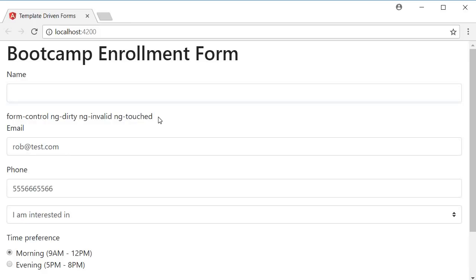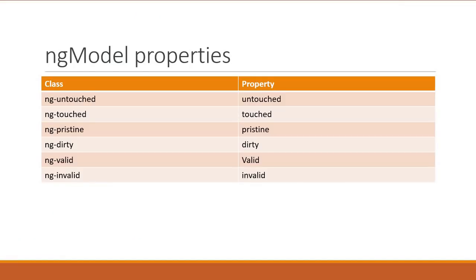Although these classes can be used to provide visual feedback, Angular also provides an alternative which is arguably better. For each of the classes, Angular provides an associated property on the ng-model directive. The property is basically the same as the class with the 'ng-' prefix removed. So ng-untouched has an associated property untouched, ng-touched has touched, ng-pristine has pristine, and similarly for the other classes.